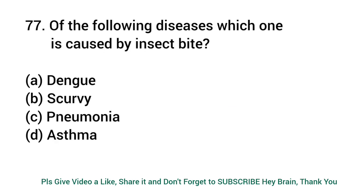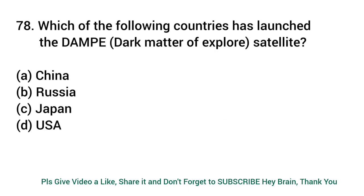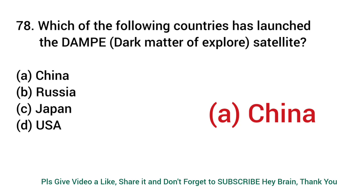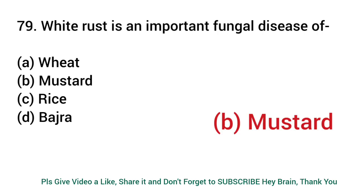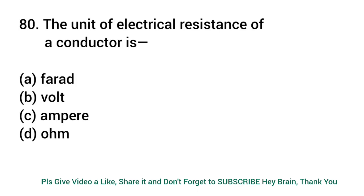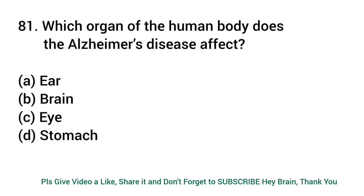Of the following diseases, which one is caused by an insect bite? Answer: Dengue. Which of the following countries has launched the dark matter explorer satellite? Answer: China. White rust is an important fungal disease of? Answer: Mustard. The unit of electrical resistance of a conductor is? Answer: Ohm. Which organ of the human body does Alzheimer's disease affect? Answer: Brain.